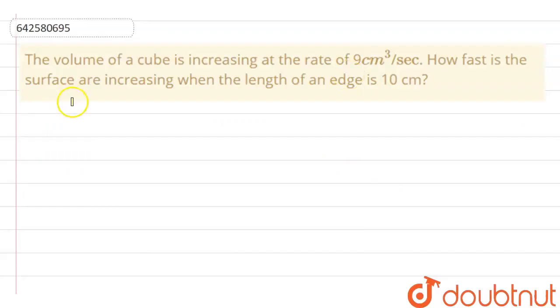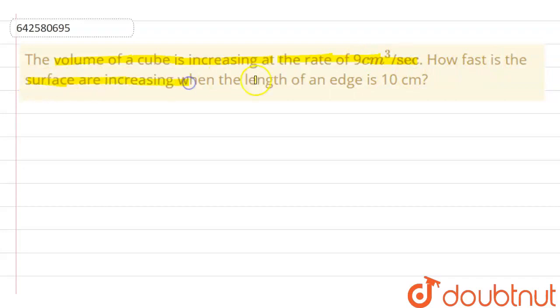Here, the question is: the volume of a cube is increasing at the rate of 9 cm³ per second. How fast is the surface area increasing when the length of an edge is 10 cm?